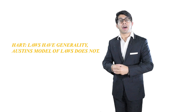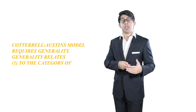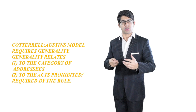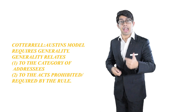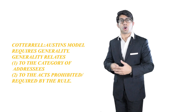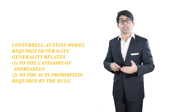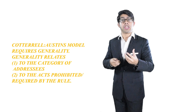For the command model, the party issuing the order must be habitually obeyed by the population and there must be a belief that sanctions for non-compliance will be effected. Cottrell responded to this criticism by stating that both Austin and Bentham require generality for a law to exist — generality relating to the category of addressees and to the acts prohibited or required by the rule, not merely a direction on one specific case or to a particular individual. Austin therefore sees law as a technical instrument that could aim for utility, not as a device to maximize liberty.